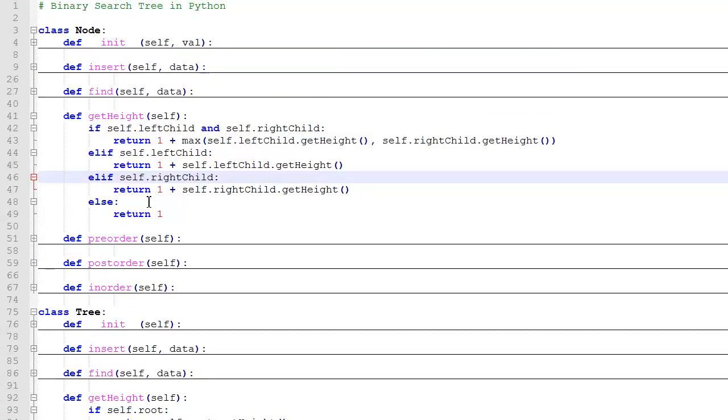So let's take a look up above at the getHeight function here in the node class. First, we're going to check and see if there's a left child and a right child. If so, we'll return one plus the max of the height of the left child and the right child. Those are recursive function calls, so it's going to continue to call this function over and over, just with one node down.